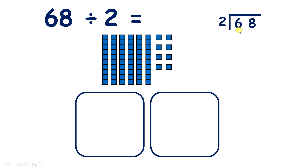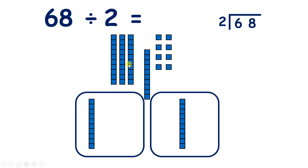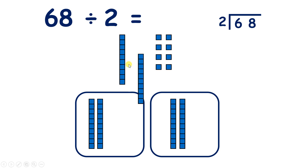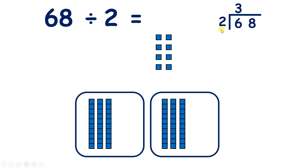We start by dividing our 6 tens by 2. If we share out those 6 tens, we have 3 tens in each group, because 6 divided by 2 is 3.